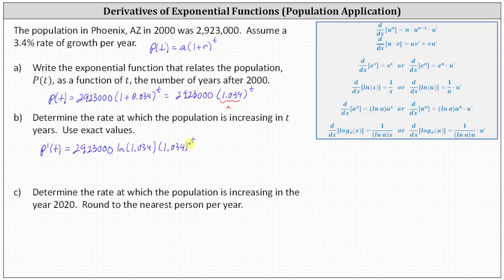And then for part C, we're asked to determine the rate at which the population is increasing in the year 2020, and we're told to round to the nearest person per year. Well, notice the year 2020 is 20 years after the base year of 2000, which means to determine the rate at which the population is increasing in the year 2020, we need to determine the derivative function value P prime of 20,